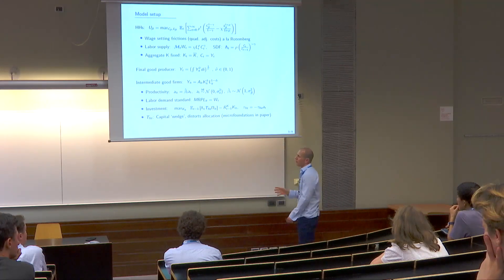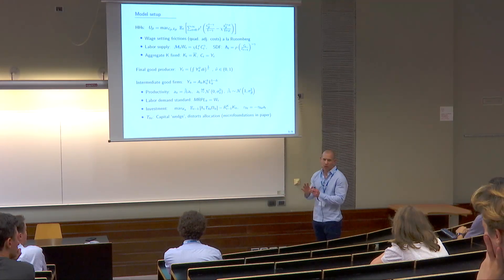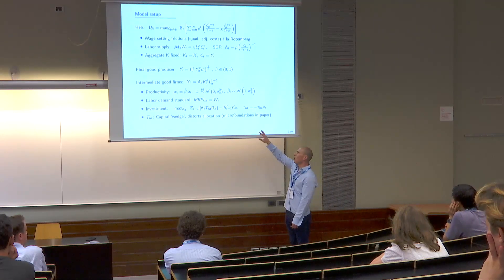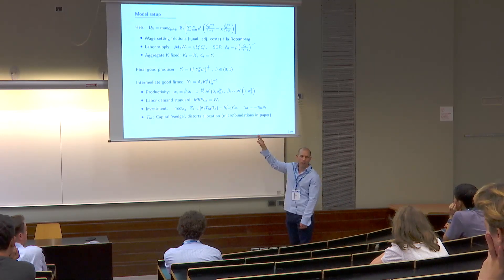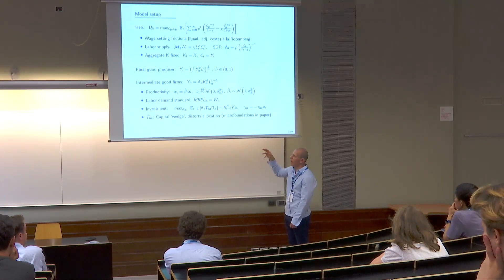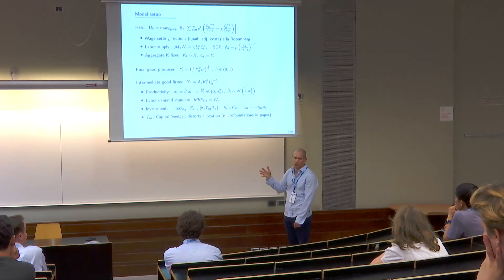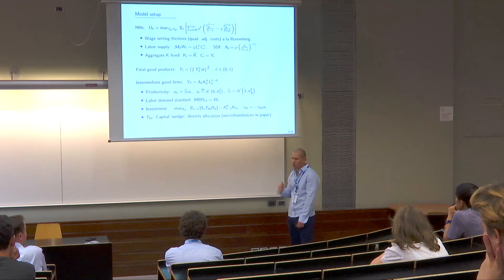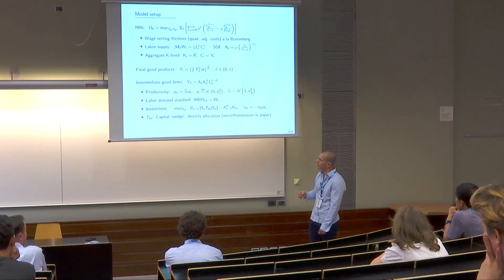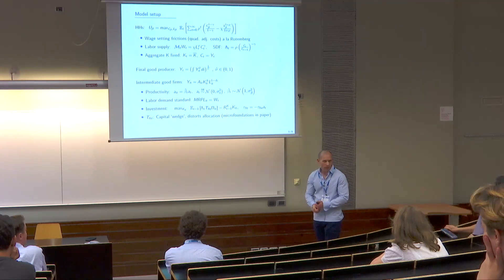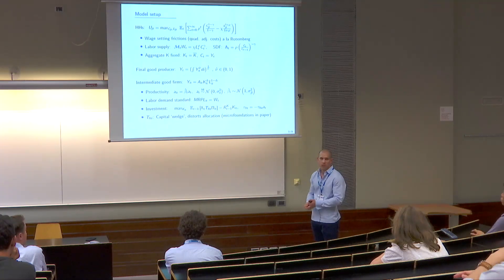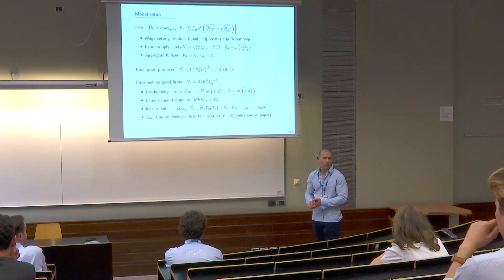For today, think of the wedge as exogenous and reduced form. In the paper we give a whole range of micro-foundations and show that the wedge arises naturally in recent models of financial frictions. As two examples worked out in detail: limited asset market participation on the part of households, and frictional financial intermediation on the part of banks. Both models give you a wedge that looks just like this in the Euler equation.